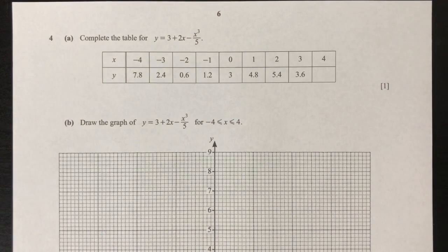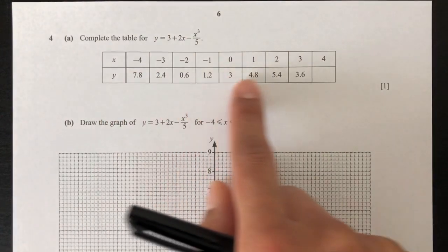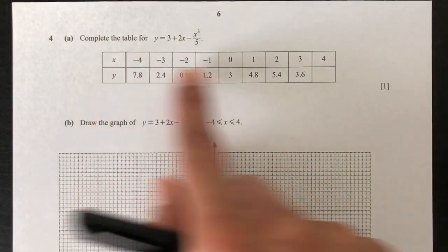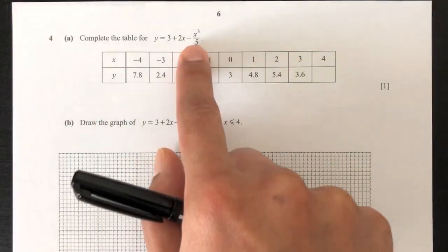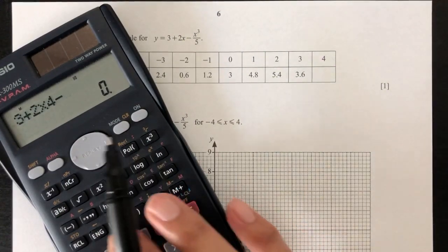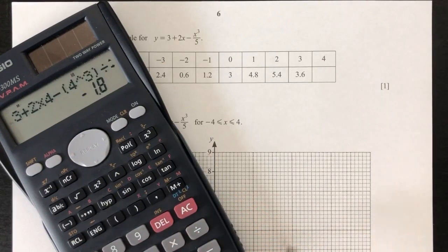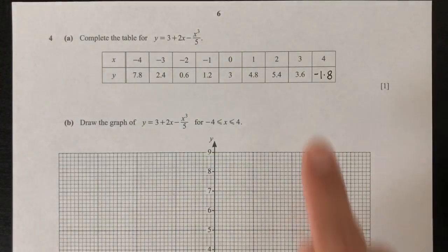So complete the table for y equal to this equation. For these values of x, we have these values of y. Here we have to find this value. When x is equal to 4, find the value of y. Replace x with 4 in this equation. So you have 3 plus 2 times 4 minus 4 cubed divided by 5. That should be minus 1.8. That will be your value for y.